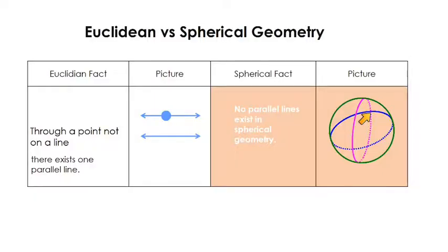You can see that this pink great circle and this blue great circle are always going to intersect in two places — one intersection here and one on the back side of the sphere. So if I draw two great circles, they will intersect in two places. There are no parallel lines in spherical geometry.